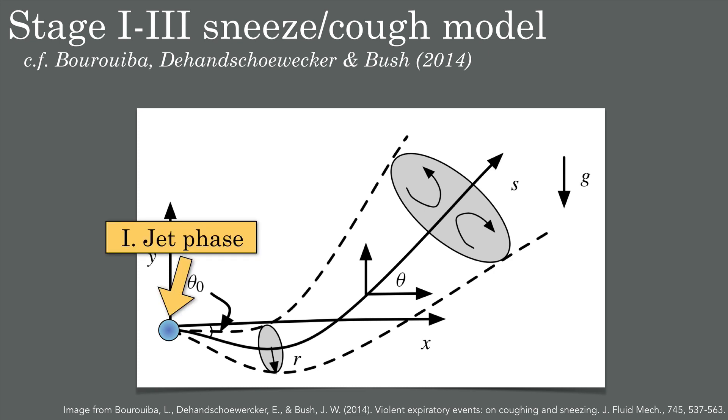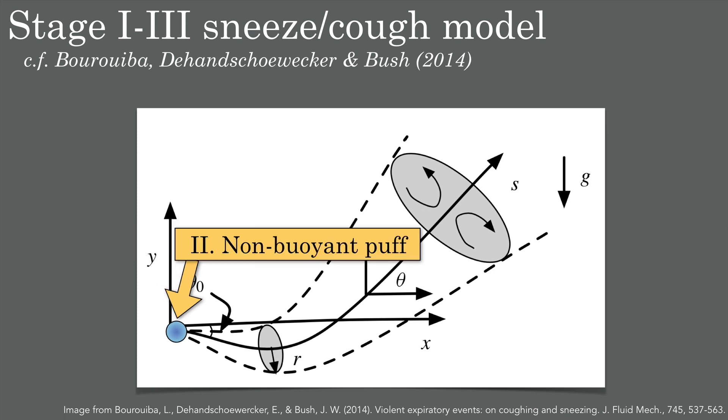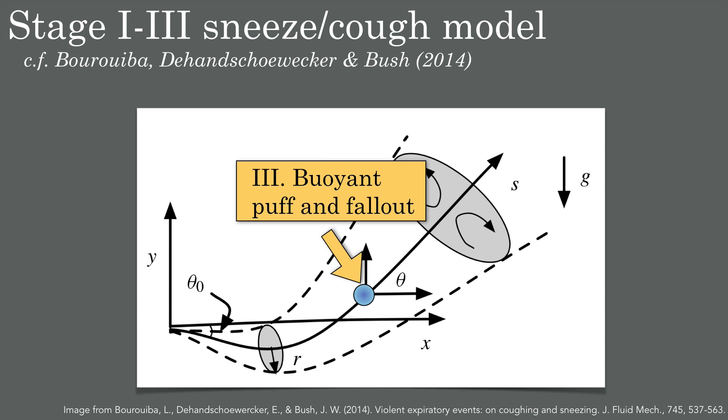In their 2014 work, Bourouiba and co-authors proposed models for this type of violent sneeze or cough. I would describe the event as occurring in three phases or stages. There is firstly an initial jet-like stage corresponding to a high-speed release. Then in the second phase, the cloud grows into a puff but is still driven by its momentum. Finally, in the third phase, the puff begins to rise or change its trajectory on account of buoyancy. From stage 2 to 3, small-scale droplets are falling out from the cloud, and this is what we refer to as fallout.